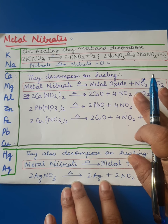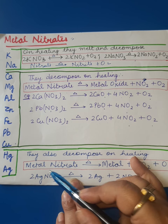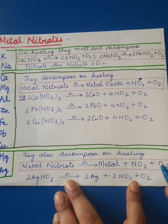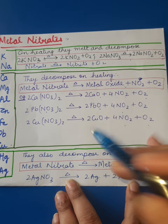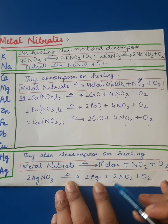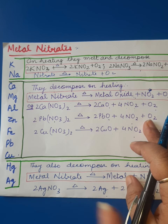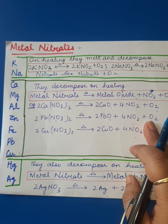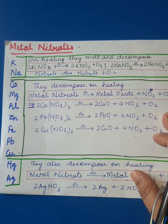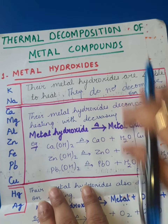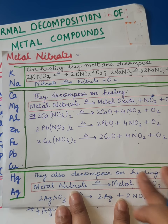For the third category — mercury and silver — their metal nitrates also decompose on heating, but differently. Their nitrates decompose into metal, nitrogen dioxide, and oxygen — not metal oxide. For example, silver nitrate on heating decomposes into silver, nitrogen dioxide, and oxygen. If you remember these tricks, then you can write any equation and these will not be trouble for you. I hope you liked the video. Thank you.